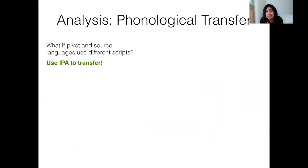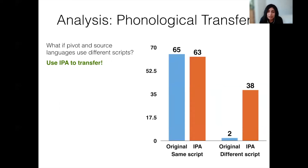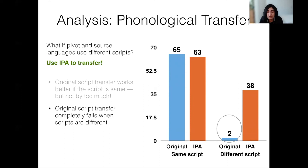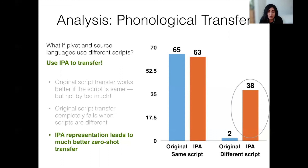Next, we analyze the utility of the phonological transfer method. In this figure, we see the average entity linking accuracy when the high and low resource languages use the same script as well as when they use different scripts. Transferring in the original script works better if the languages use the same script, but transferring through IPA is almost as good on average. As expected, transferring through the original script completely fails if the scripts are different. Converting the data to IPA representations leads to much better zero-shot transfer for entity linking in such cases.